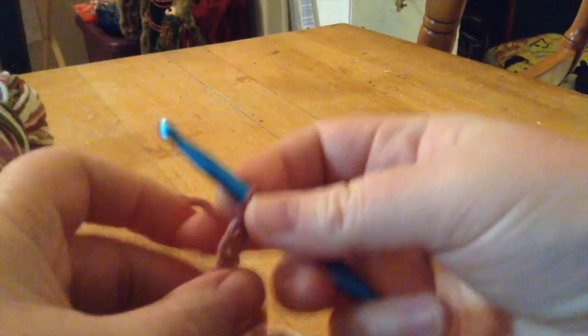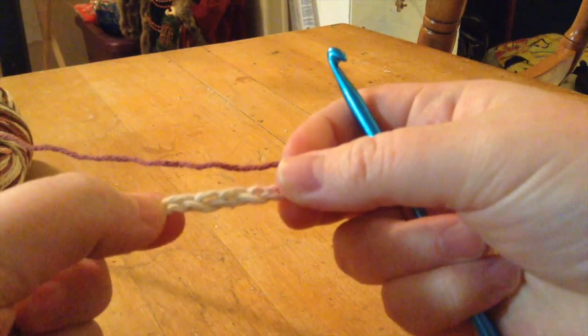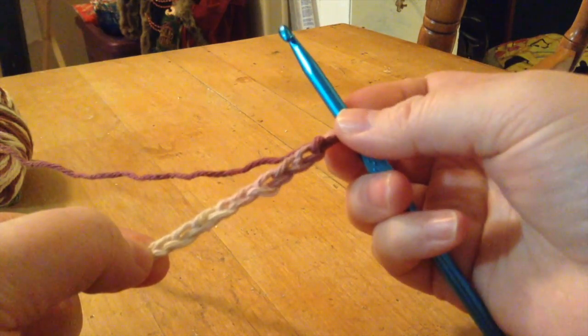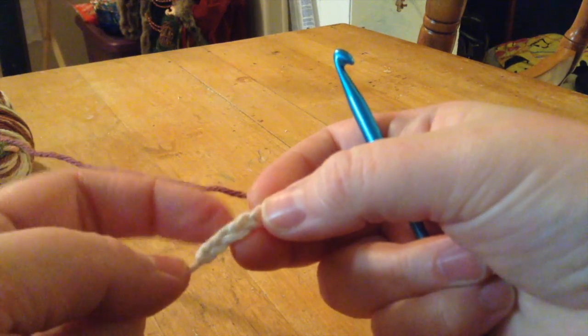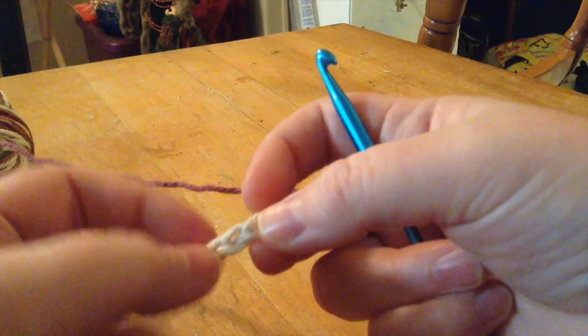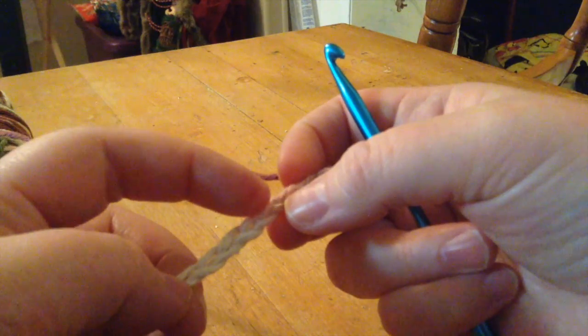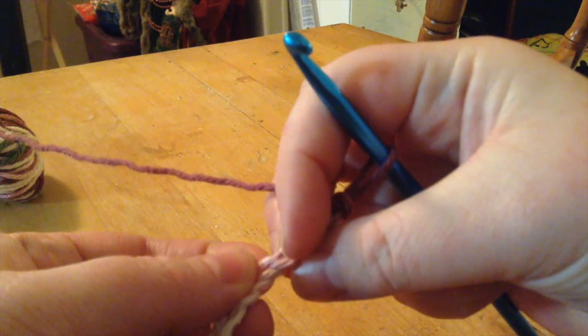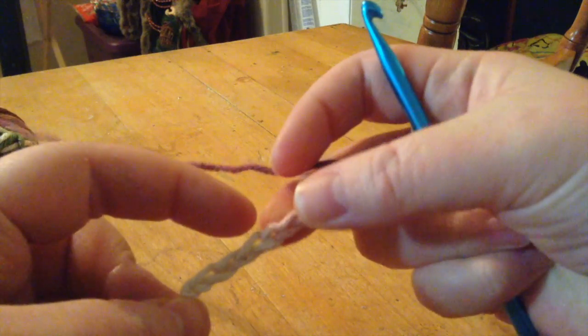Now to count your stitches, you don't count your slipknot. You don't count the stitch that is on your hook here, the loop that's on your hook. You can see this one kind of goes around, so you're looking at where it goes up like this and you can kind of see the differentiated stitches there. So I've got one, two, three, four, five, six, seven, eight, nine.